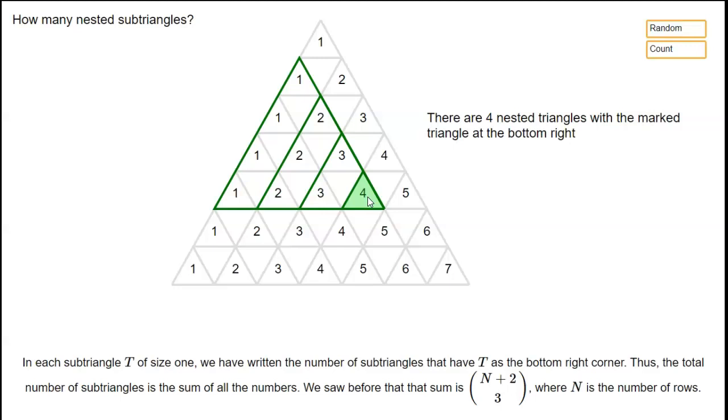But if we stretch it out to size 4 then we hit the left edge of the big triangle, so we can't stretch it any further. So there's four possibilities for having a nested triangle with this highlighted triangle as the bottom right corner.